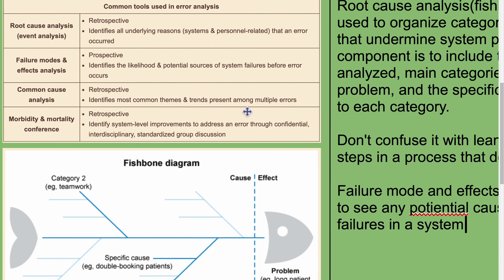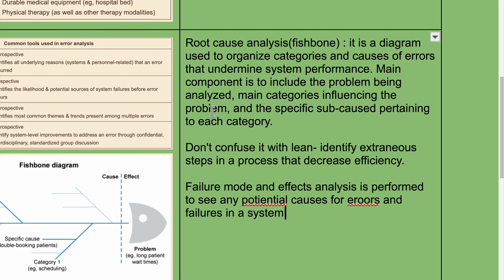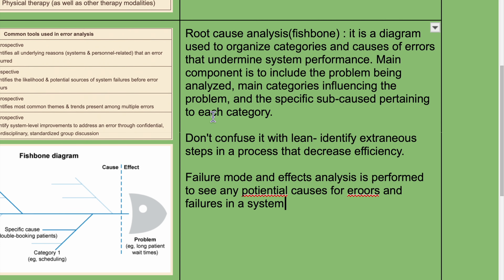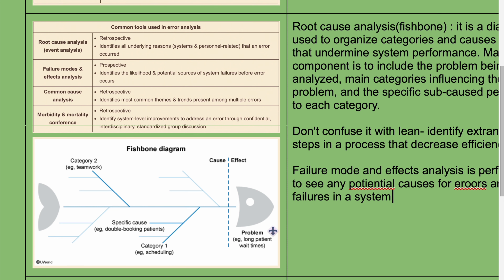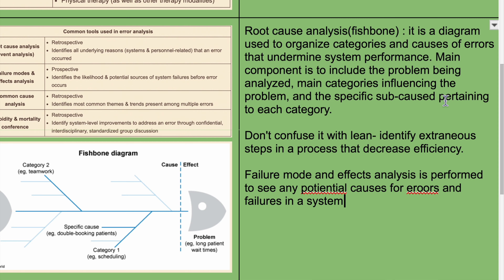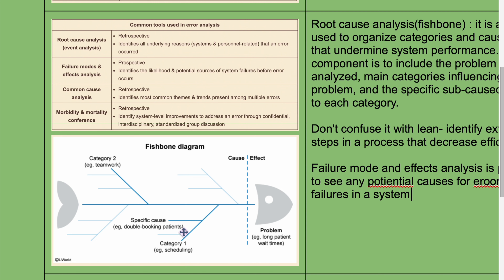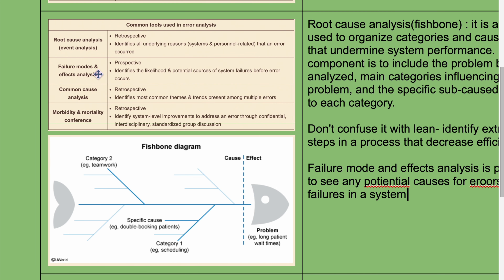Root cause analysis organizes categories and causes of errors that undermine system performance. Main components include the problem being analyzed, main categories influencing the problem, and specific sub-causes per category. Failure modes and effects analysis is prospective — it identifies the likelihood of potential sources of system failures before an error occurs, essentially running drills to see what can go wrong and then correcting it. Common cause analysis is retrospective and identifies the most common themes and trends present among multiple errors.